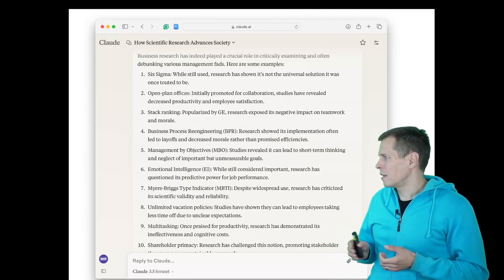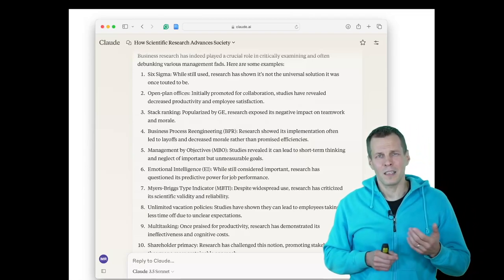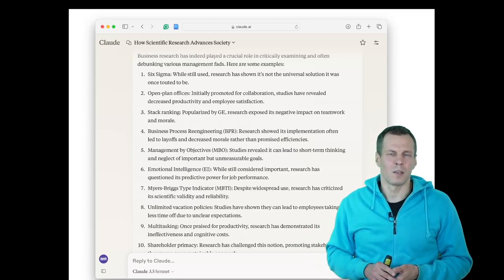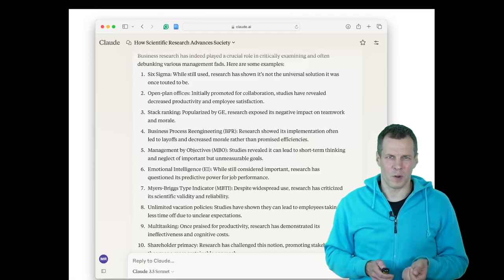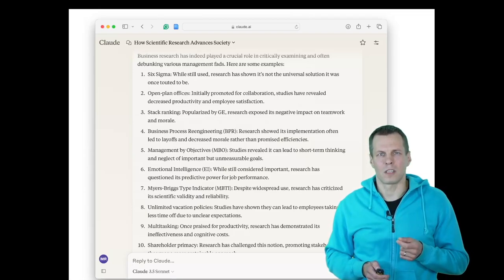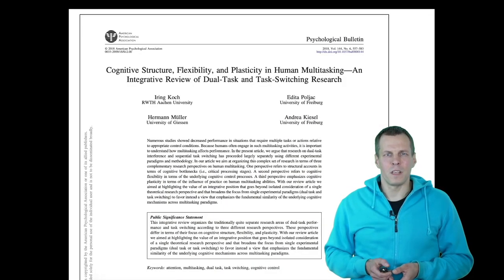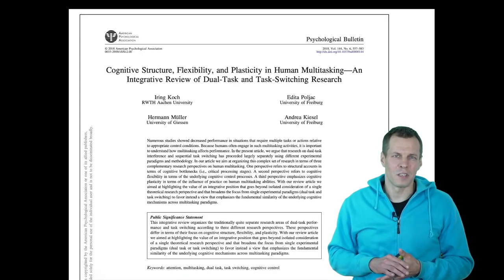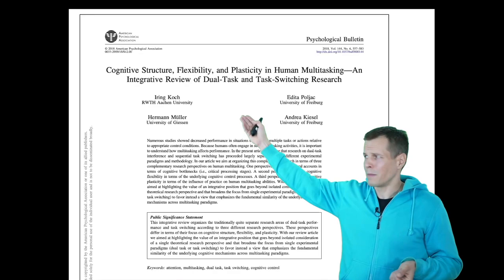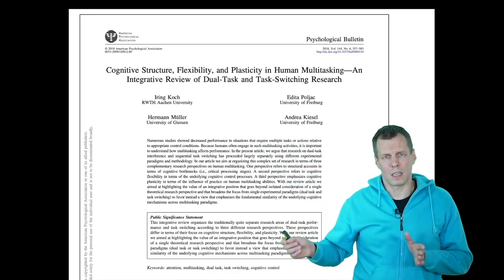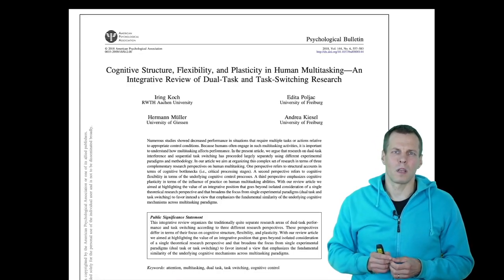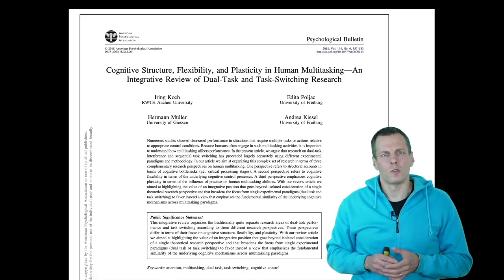Another example is multitasking — doing many things at the same time or switching between tasks frequently. Some people think this increases productivity, but it actually decreases it because it's very difficult to focus intensively on the task at hand. There's a lot of research by organizational psychologists on the drawbacks of multitasking, dual tasking, and task switching. It is much better to work on something intensively for one hour, then work on something else intensively the next hour, than to switch between tasks all the time.